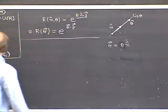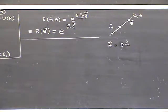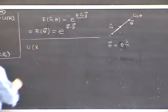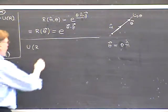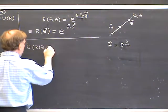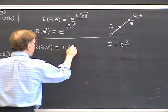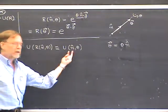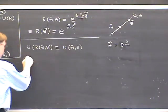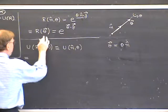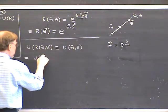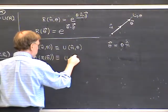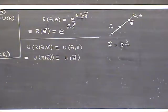As long as we're discussing notation, let's also define the corresponding unitary operators. U is parameterized by R, so in axis-angle form we write U of n-hat comma theta. Or using the theta-vector notation, this becomes U of theta-vector. This is just notation.